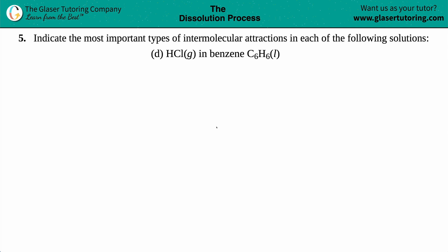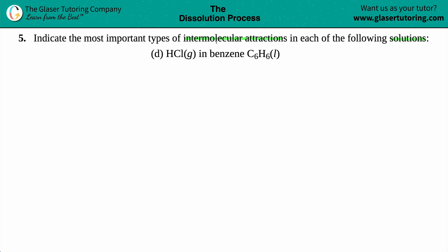Number five: indicate the most important types of intermolecular attractions in each of the following solutions. We have HCl gas dissolved in benzene (C6H6 liquid). Between HCl and C6H6, we have to find the most important — meaning the highest level of intermolecular attractions.